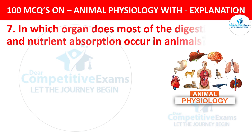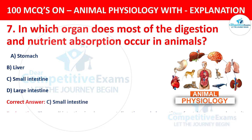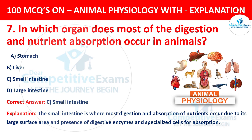Question number 7. In which organ does most of the digestion and nutrient absorption occur in animals? The options are stomach, liver, small intestine, or large intestine. The correct answer is C, small intestine. The small intestine is where most digestion and absorption of nutrients occur due to its large surface area and presence of digestive enzymes and specialized cells for absorption.